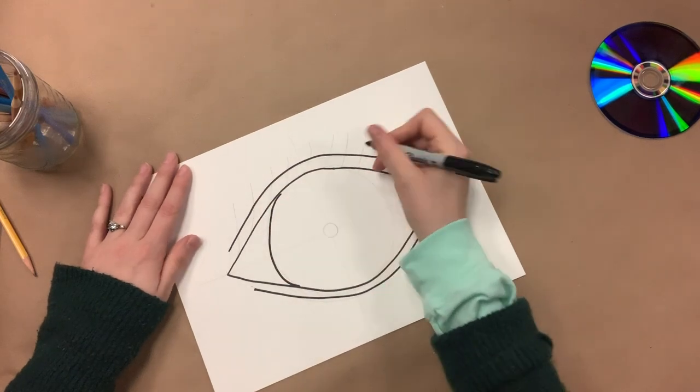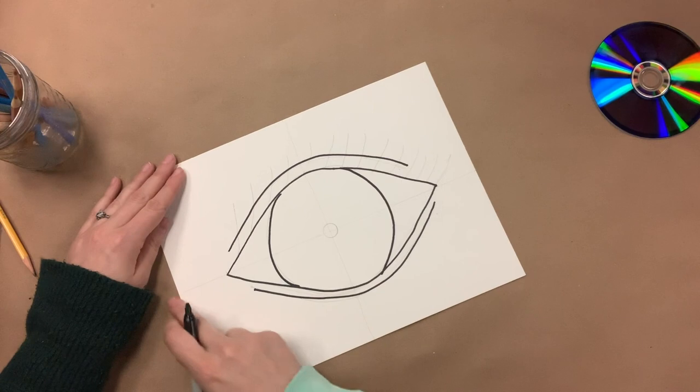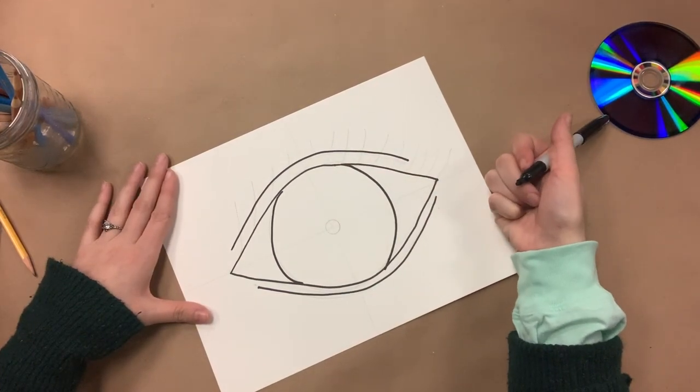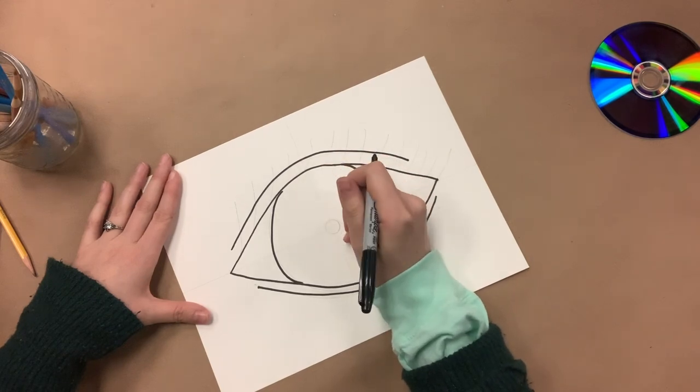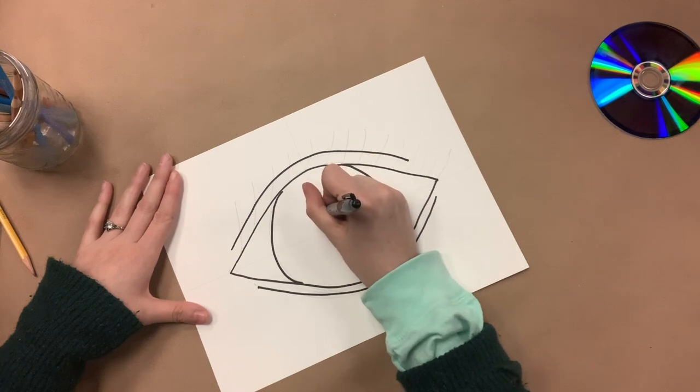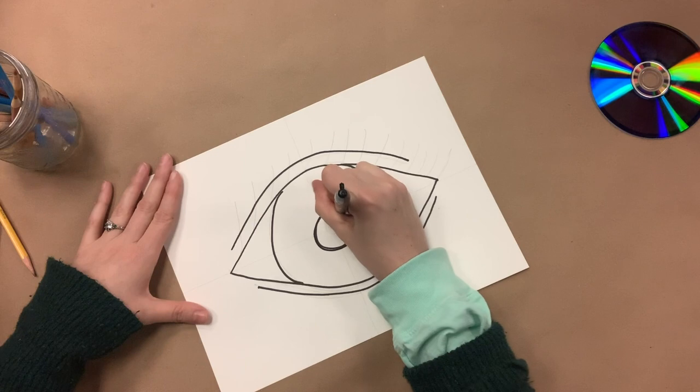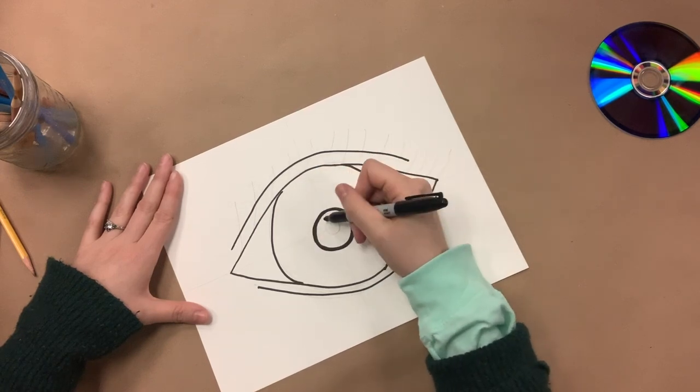The only thing you're not going to outline are the lines that you made to find the center of the paper. Now, if you did use a CD like me, you're going to make your pupil a little bit larger. I would maybe double the size of it. And just fill it in.